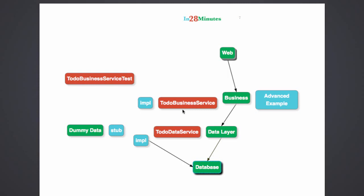There are multiple ways to write a unit test for the to-do business service. One way is to use the real implementation of the to-do data service, talk to the database, and write the unit test. But in that situation it would no longer be a unit test — it would be an integration test, because the business service is directly talking to the data service which talks to the database. Multiple layers are involved. What would happen if the database is down? The unit test fails. What if some data in the database changes — you expect two rows but there are three? These kinds of things cause problems when unit tests run over multiple layers or connect to external systems.